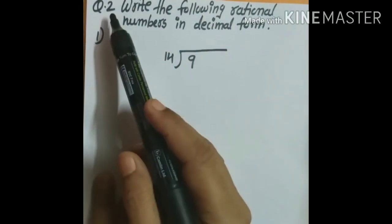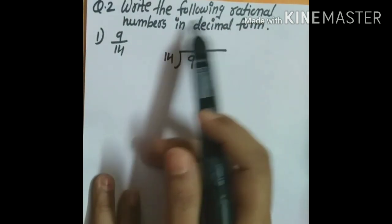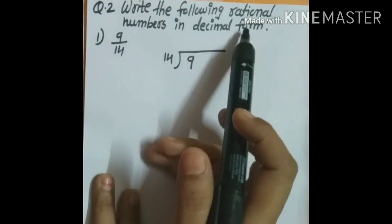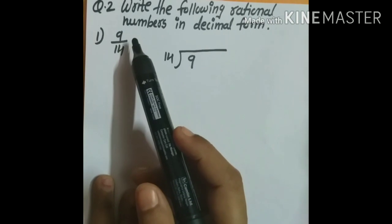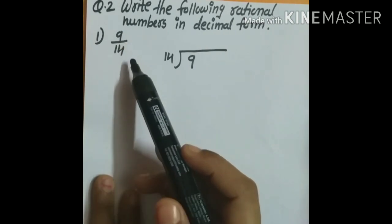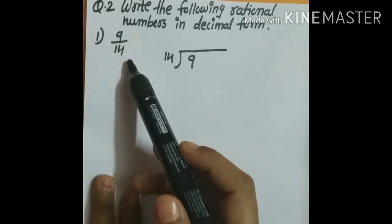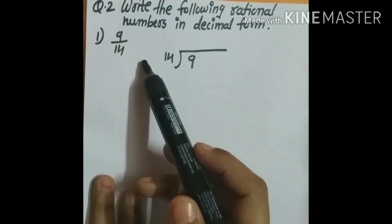Question number 2: Write the following rational numbers in decimal form. Here the rational number is 9 upon 14. We have to convert this into decimal form by doing simple division, with 14 on the outside and 9 on the inside.